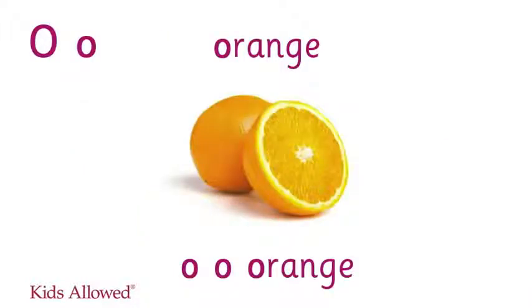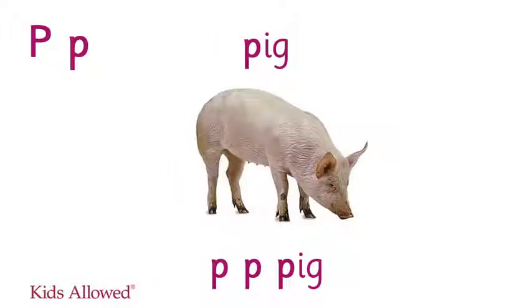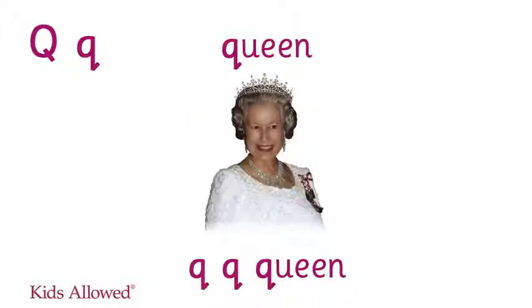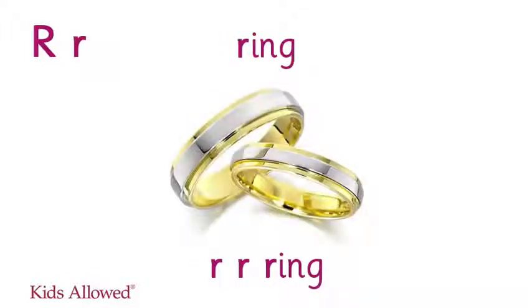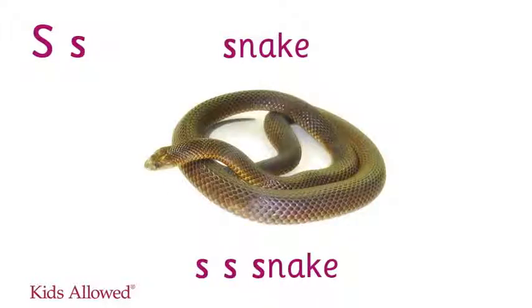A is for orange. A, orange. P is for pig. P, pig. Q is for queen. Q, queen. R is for ring. R, ring. S is for snake. Snake.